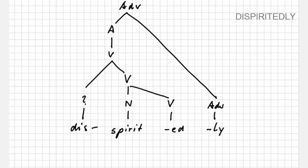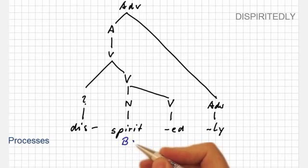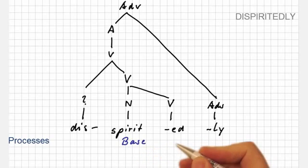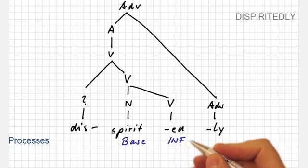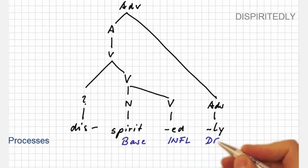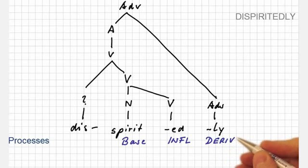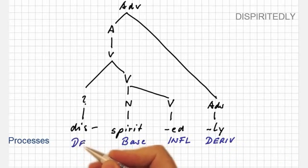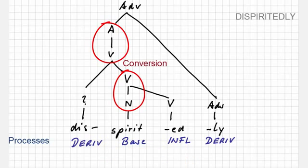The morphological processes involved can easily be described. Spirit is the base form, '-ed' is an inflectional process, and the remaining affixes form derivatives. Note that twice, we have examples of conversion.